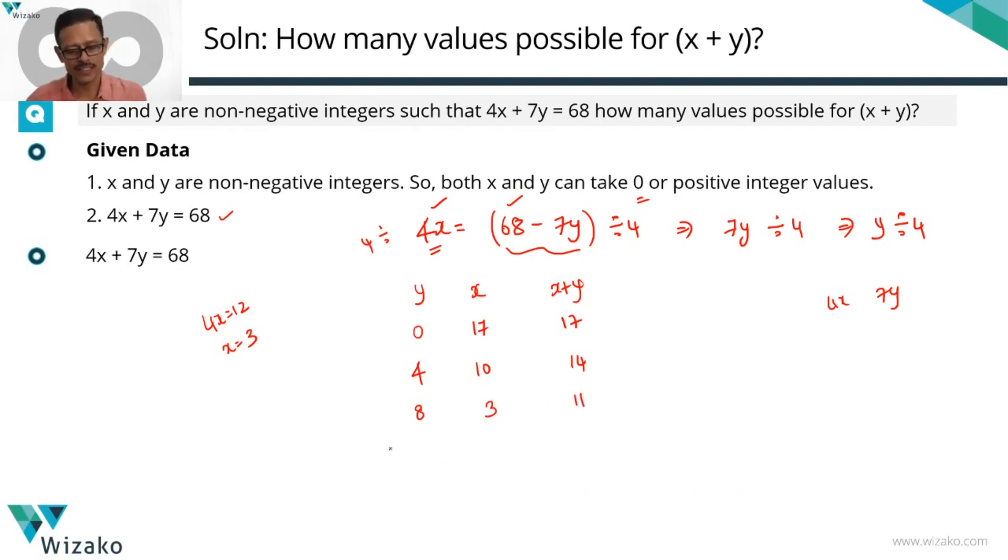So the next value for y, it's going to be 12. If y is 12, 4x is equal to 68 minus 84 which is a negative number which means x is going to be negative. 68 minus 84 is minus 16. So x will be equal to minus 4.